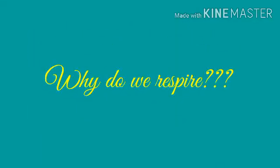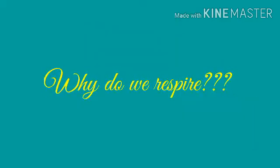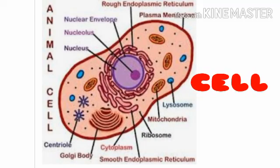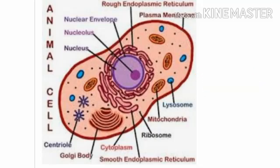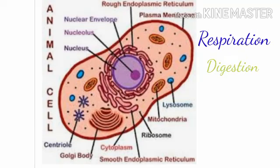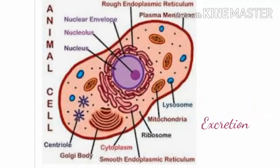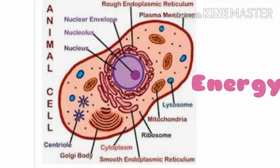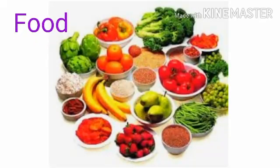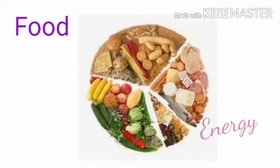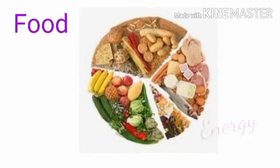So the question is: why do we respire? All living organisms are made up of small microscopic units called cells. These cells have different functions to perform, such as digestion, respiration, transportation, and excretion. The cells can perform these functions only if they get the energy to do so. Hence, all living organisms need food, which gives them the required energy.